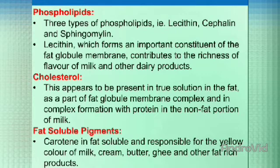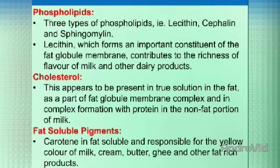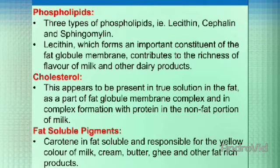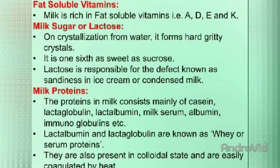The next substance is cholesterol. It appears to be present in solution in fat as part of the fat globule membrane complex, and in complex formation with protein in the non-fat portion of milk. The third is fat-soluble pigments. Carotin is fat-soluble and responsible for the yellow color of milk, cream, butter, ghee, and other fat-rich products. The fat-soluble vitamins A, D, E, and K are also found in milk.